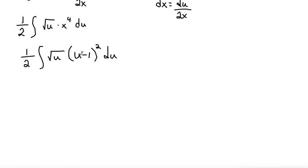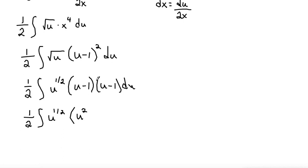So I'm going to start by distributing out my u minus 1 squared. So that makes 1 half integral and I'm going to write my square root of u as u to the power of 1 half. And then when I distribute out, this would be u minus 1 times u minus 1 du. So then when I distribute, I will have u squared, I'll have a minus u and then another minus u, so it'll be minus 2u and then negative 1 times negative 1 is plus 1 du. So now what I can do is I can distribute my u to the 1 half to make all separate terms.